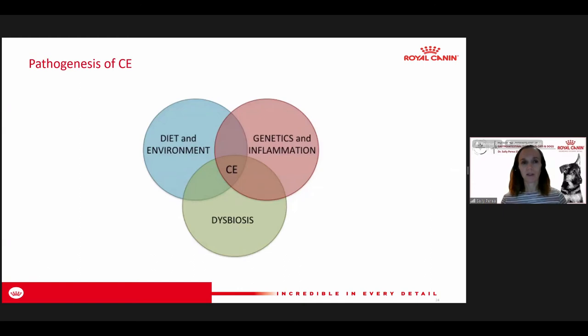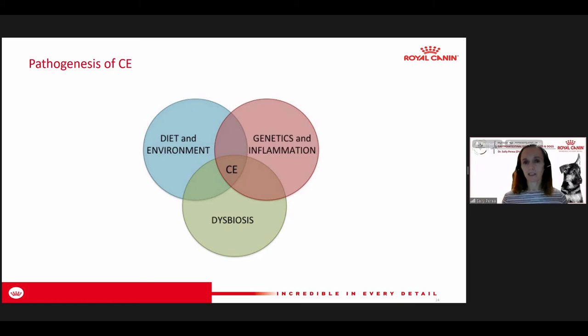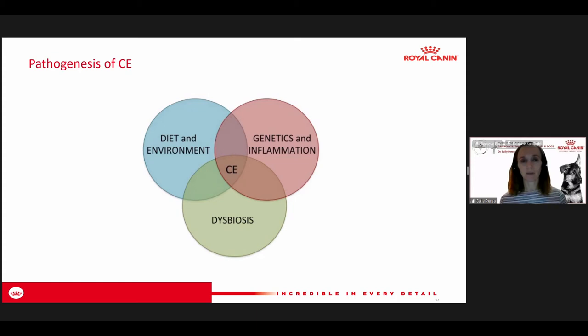Regarding the pathogenesis of chronic enteropathy, it's really multiple components. It's by definition an idiopathic disease — we don't fully know what causes it in pets. We define cases by what they respond to. We know there's some interaction of diet, environment, genetics, and inflammation. Dysbiosis — how the microflora gets disrupted in chronic enteropathy — is an area of strong recent interest. It appears secondary to the disease but seems related, and we're still trying to figure it out through research.